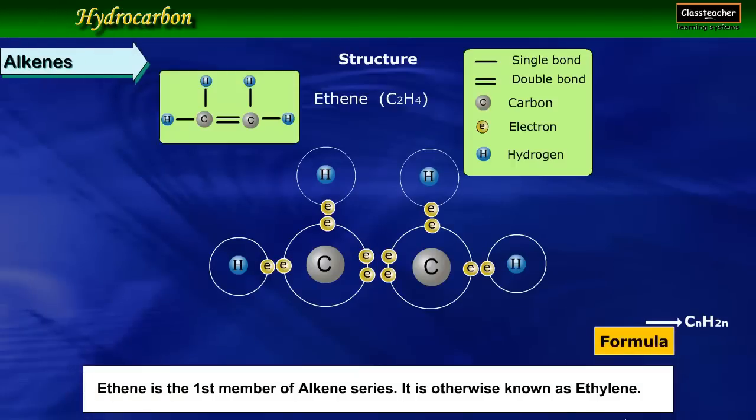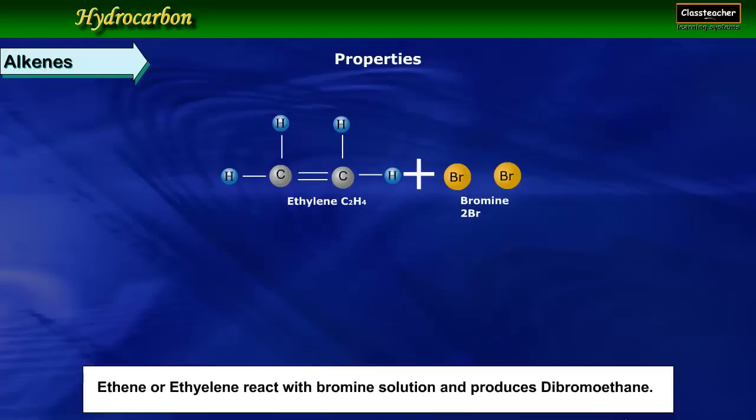Alkenes. Ethene is the first member of alkene series. It is otherwise known as ethylene. Ethene or ethylene reacts with bromine solution and produces dibromomethane.